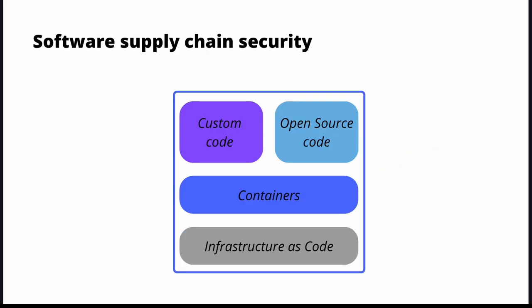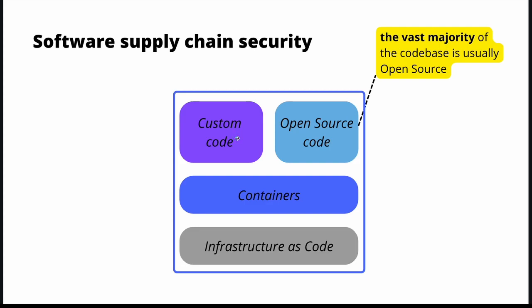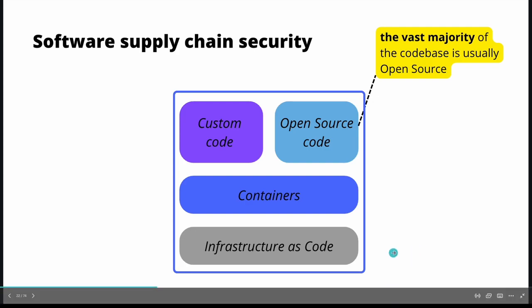Let's start with software supply chain security. Every application can be decomposed into categories of code that contribute to the entire system. Not all applications use infrastructure as code or containers, but for sure you have some open source code alongside your custom application-specific code. Each of these categories may contain different security risks, and with DevSecOps you can monitor and assess the security profile of each part of your system. It's worth noting that a vast majority of the code base nowadays is open source, so it is extremely important to ensure your dependencies are free of vulnerabilities.